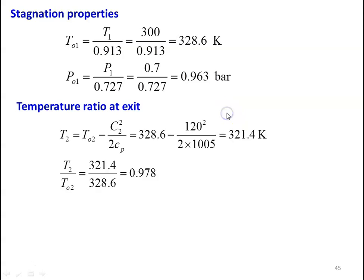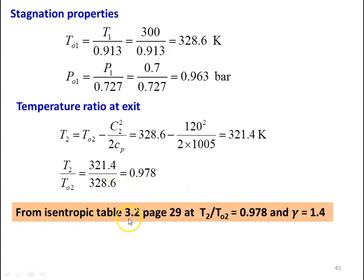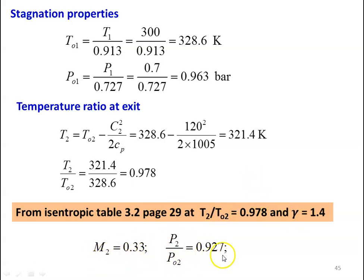We calculate the static temperature at the outlet of the diffuser: T2 equal to T02 minus C2 square by 2 Cp, which is 328.6 minus 120 square divided by 2 into 1005, equal to 321.4 Kelvin. T2/T02 equal to 321.4 divided by 328.6, equal to 0.978. From the isentropic table 3.2 at T2/T02 equal to 0.978 and gamma equal to 1.4, we take M2 equal to 0.33 and P2/P02 equal to 0.927.